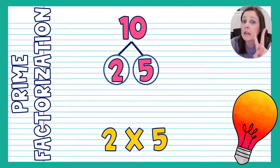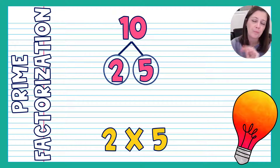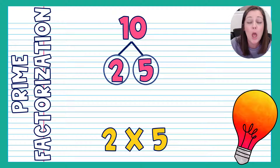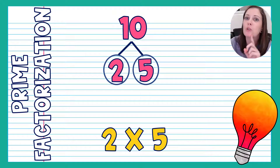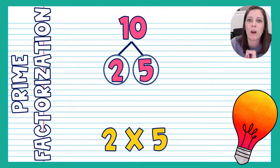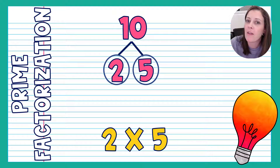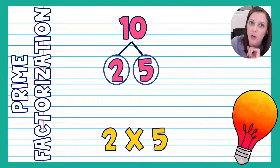Hint number two for prime factorization: when you are writing out your prime factorization as a multiplication statement, always put your numbers in order from least to greatest. So here we write 2 times 5 instead of 5 times 2. I would pause and write that down — always put them in order from least to greatest.